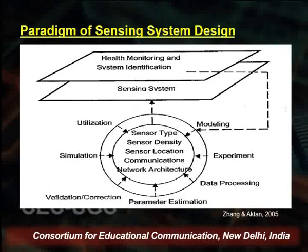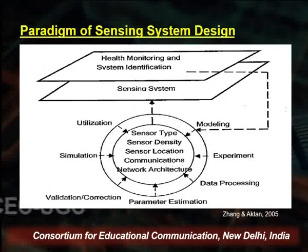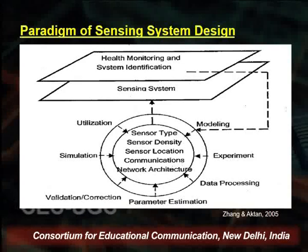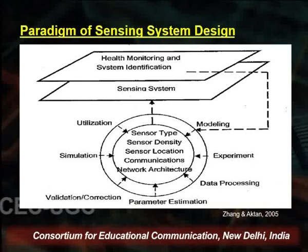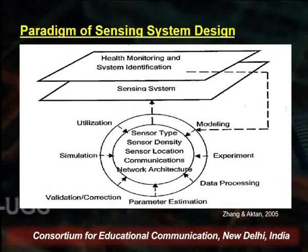In the sensing system design paradigm, we first select what type of sensor we are preparing. The key design points are sensor type, sensor density, sensor location, and communication network architecture. Based on the application requirement — for example, health monitoring and system identification — the sensors are prepared. Aspects such as modeling, experimentation, data processing, parameter estimation, validation, correction, and simulation are all part of this sensing system paradigm.